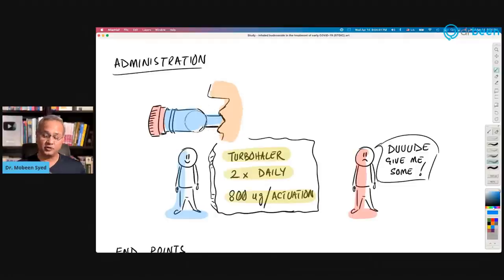What did they do? So the budesonide, what they did was they asked them to use turbohaler. Turbohaler is an inhaler. Turbohaler twice daily with 800 microgram per actuation for the budesonide. That was the dosage they were giving twice daily. And then of course, there was a control group here as well that was saying, dude, give me some budesonide as well, but they were not.